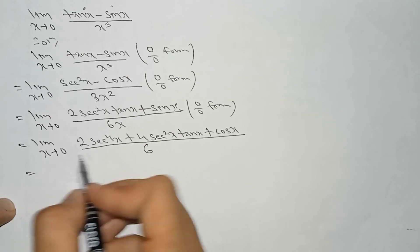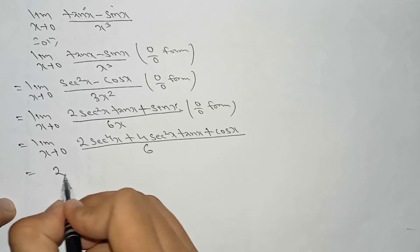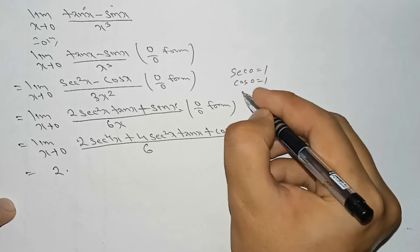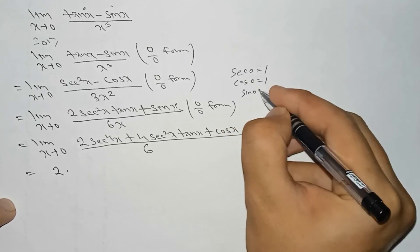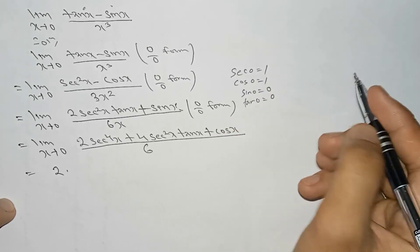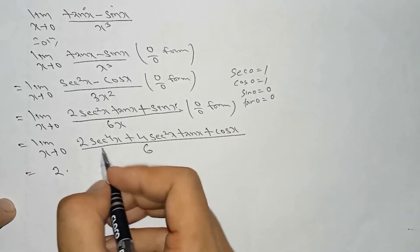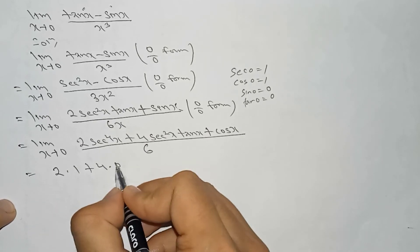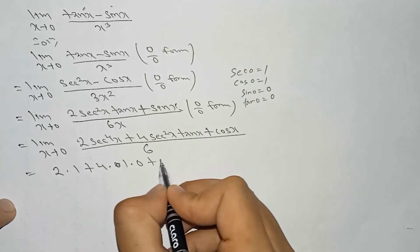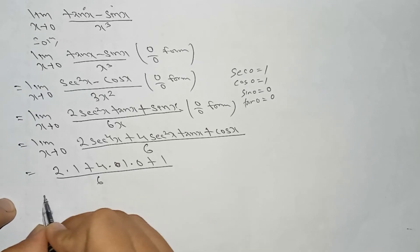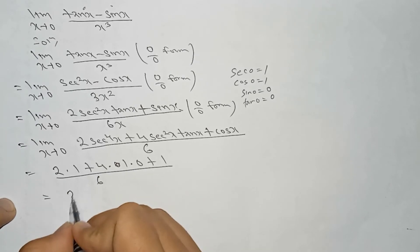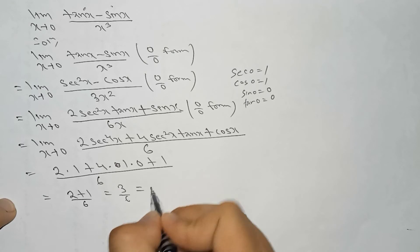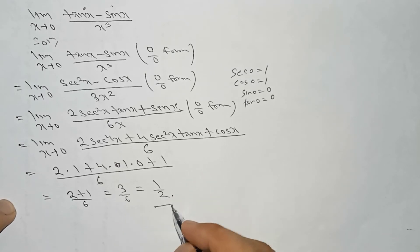So we can put the value: limit x tends to 0. As you know, sec 0 equals 1, cos 0 equals 1, and tan 0 equals 0. So it becomes 2 times 1 plus 4 times 1 times 0, plus 1, all divided by 6. That gives 2 plus 1 divided by 6, which is 3 by 6, equal to 1 by 2. So 1 by 2 is the solution.